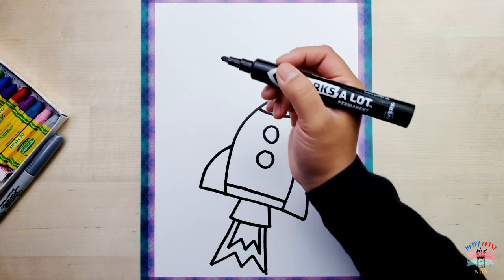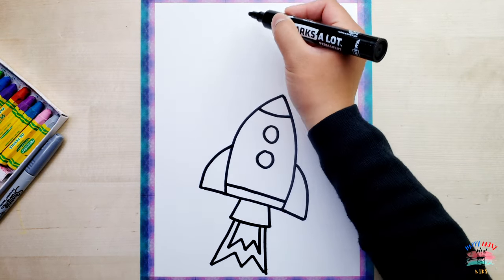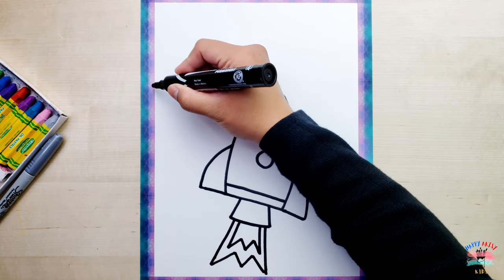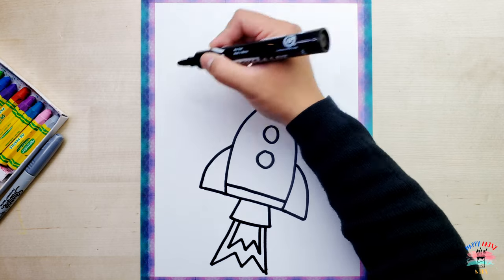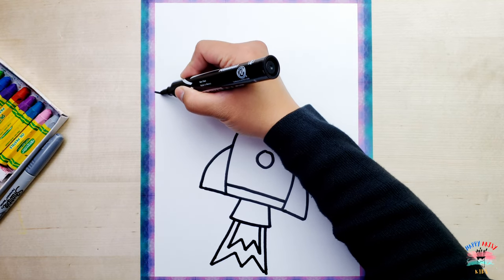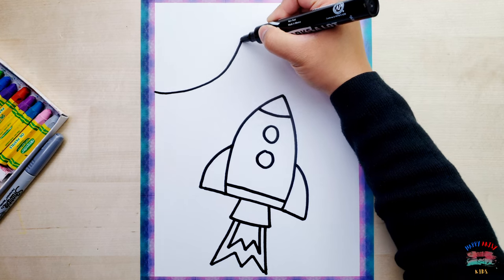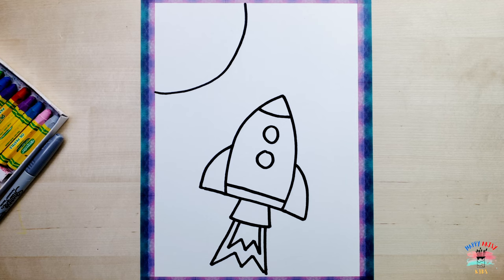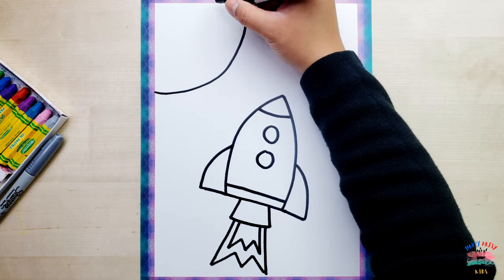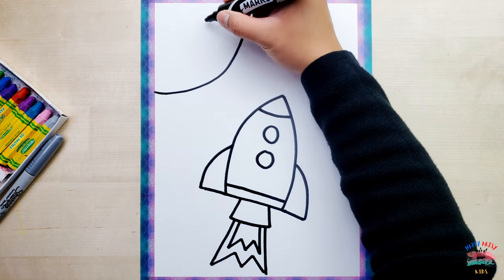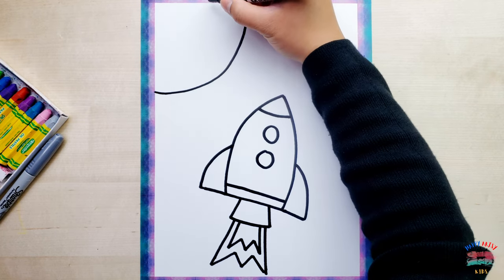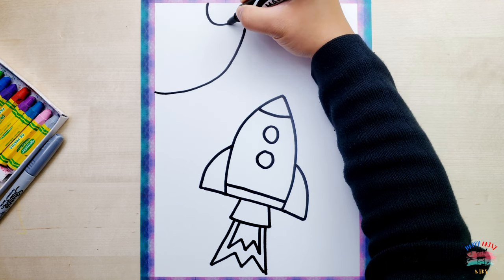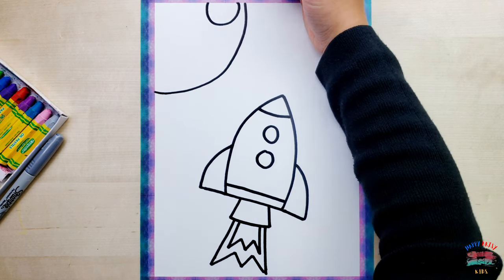Now let's draw the moon over here. A big curved line like that. From here to here. Like that. Now let's draw the surface of the moon. Just going to draw a couple of circles.